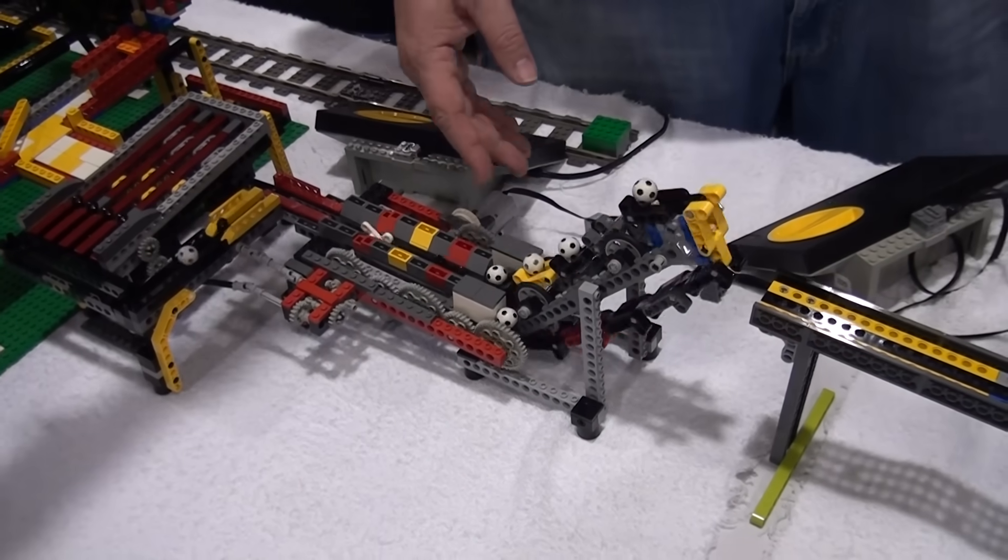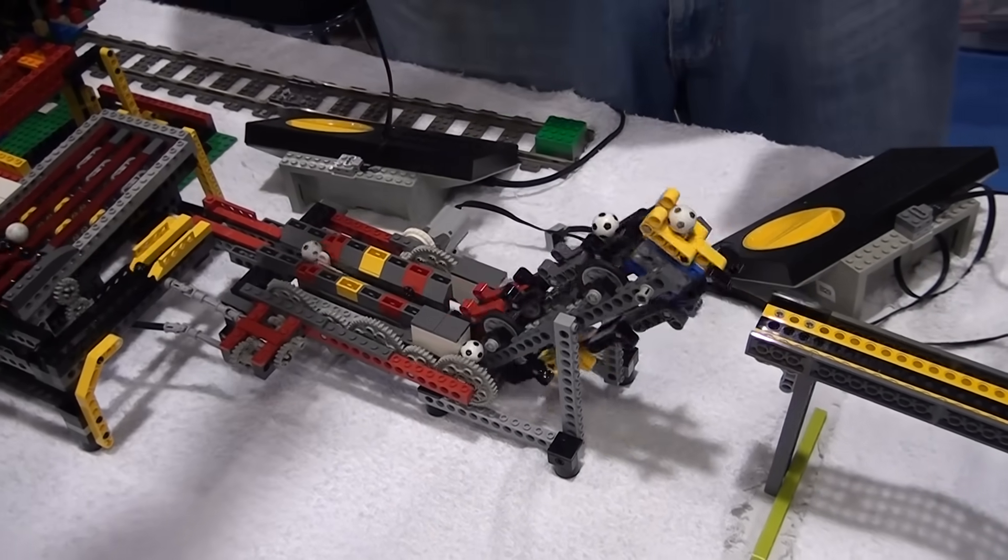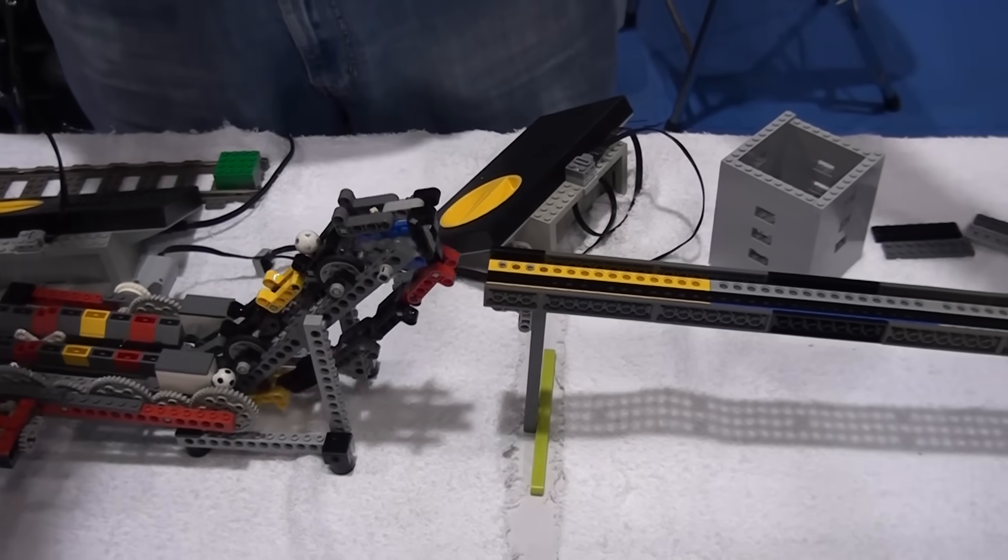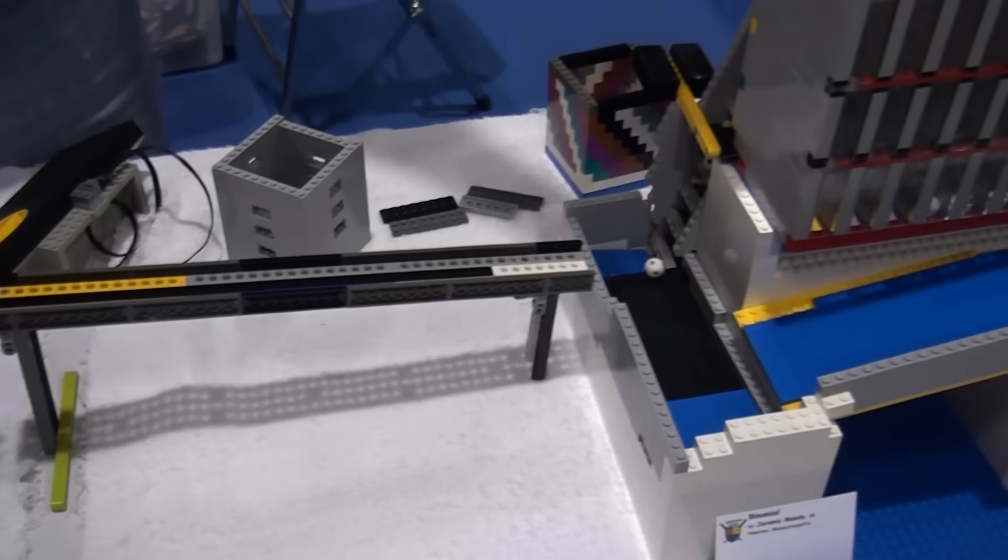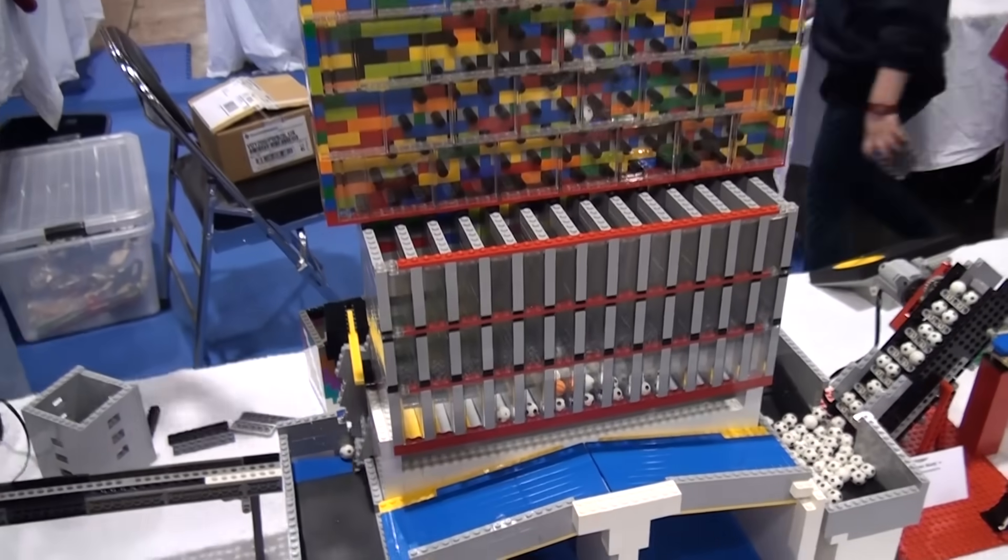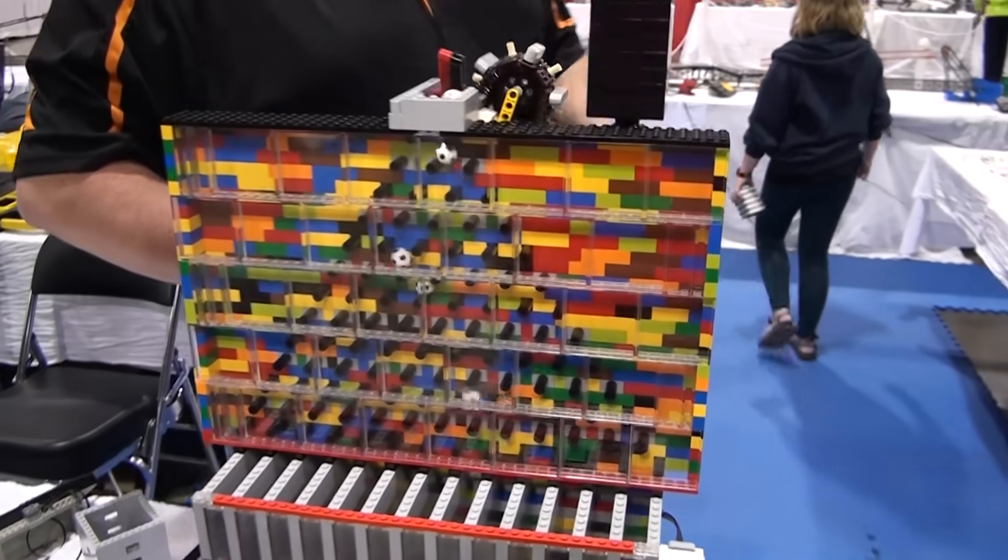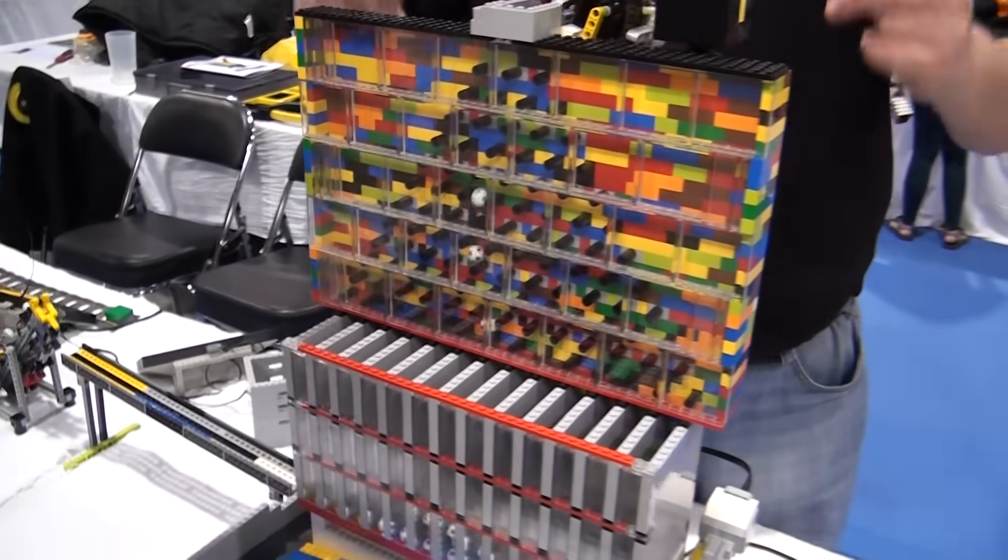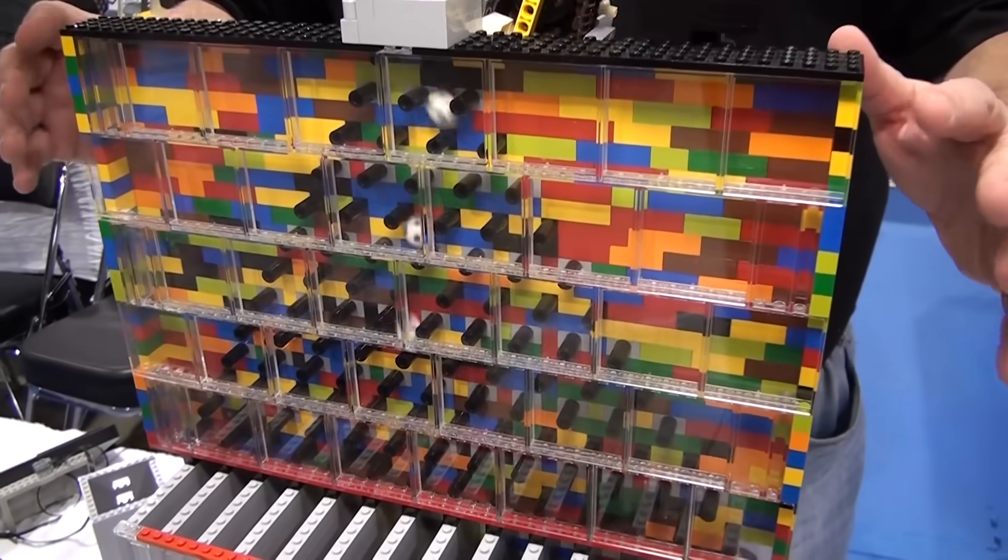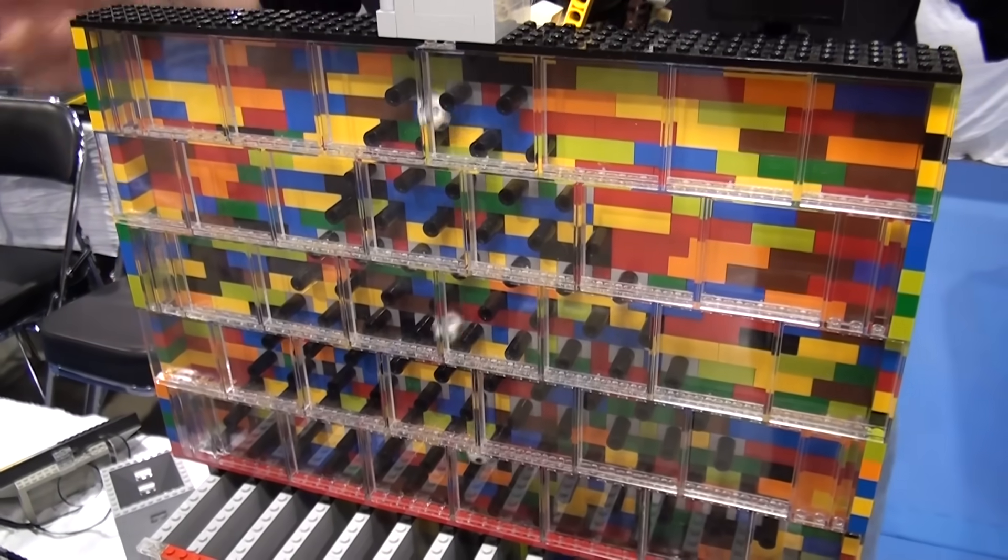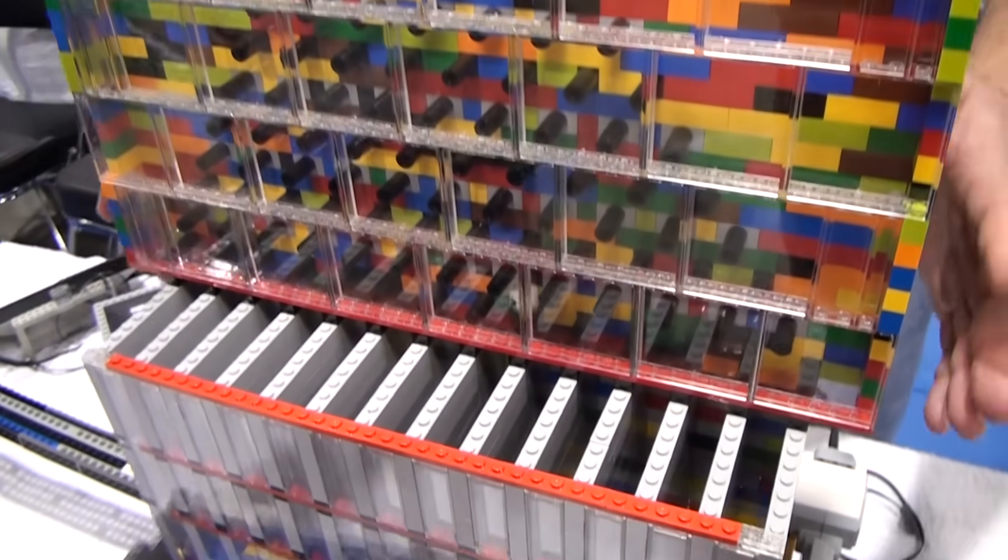We got balls rolling down through these nice little lifts that push them along slowly. Then a nice homemade chain here, and they roll down to Jeremy's big probability buster.